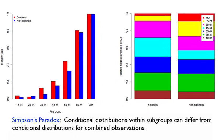This is an example of Simpson's paradox, in which conditional distributions within subgroups can give the opposite conclusion to conditional distributions for the combined observations. Age here is a lurking variable — we need to always watch for lurking variables which, if taken into account in our analyses, might affect our conclusions. In upcoming lectures, we'll talk about data collection and how to design a study to mitigate the effects of lurking variables.